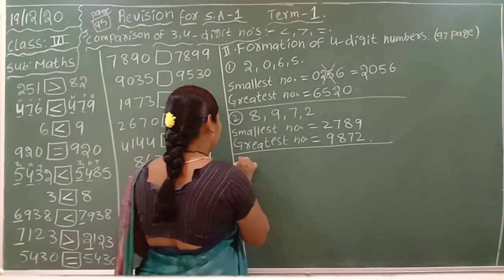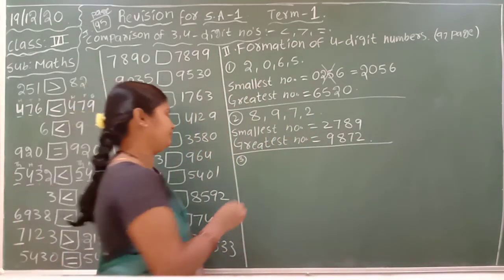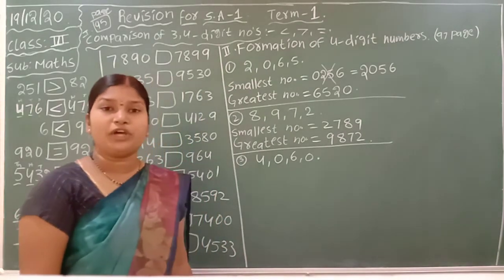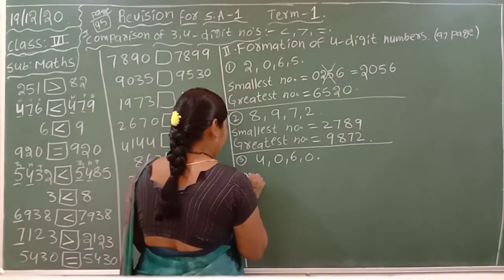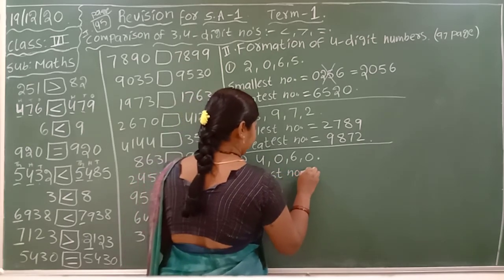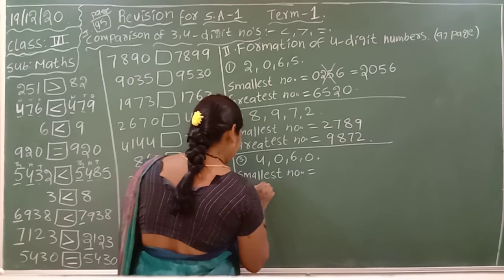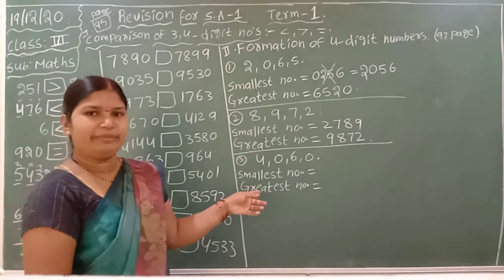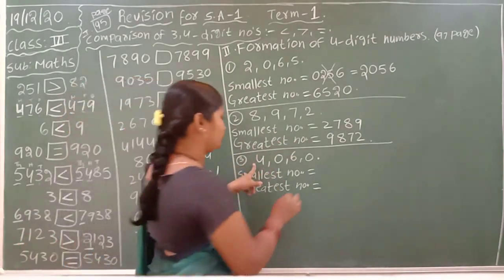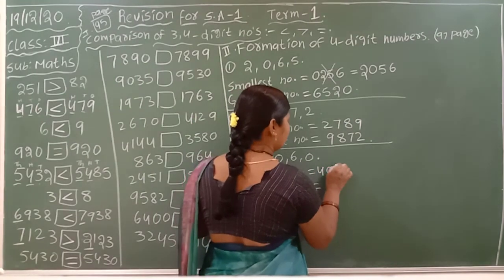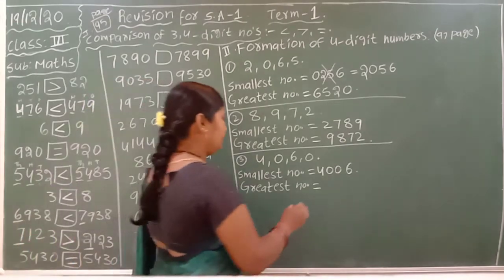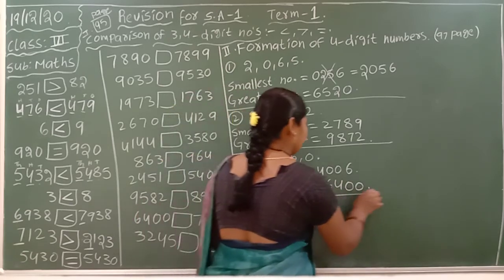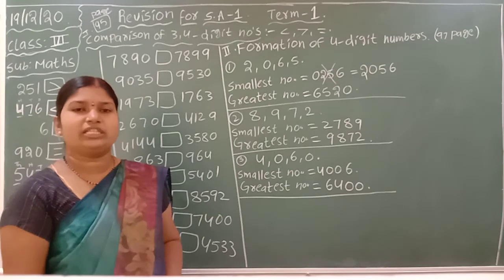When you are having zeros, then only you are getting confusion. For example, digits 4, 0, 6, 0. For the smallest number, first write the small non-zero number, then write the 0s, then the remaining digits. For the greatest number, write the big number first, next big number, then the 0s last. These are the rules for formation of 4-digit numbers using the given digits.